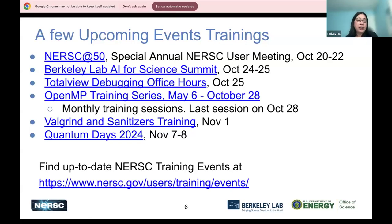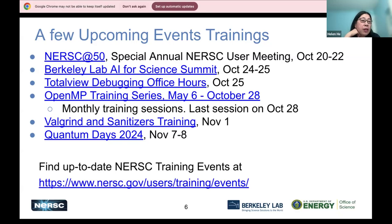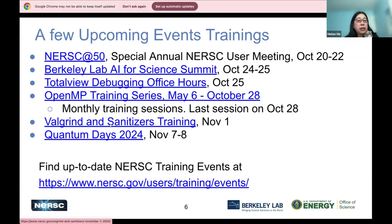I want to let you know about a few upcoming training events. First, NERSC 50 — you have a choice to join in person or remotely. There's a special NERSC 50 celebration, and you can find the agenda and registration info on the website. Note there may be a typo in the dates for NERSC 50 since it's connected to the Berkeley Lab event. Berkeley Lab AI for Science is an in-person-only event covering AI topics. Following that, there are two other debugging and profiling sessions: a Totalview debugging office hours where you can ask questions and see presentations, and a Valgrind and sanitizer training on November 1st — also hands-on.